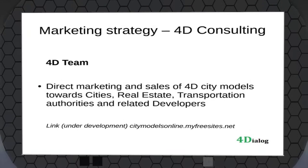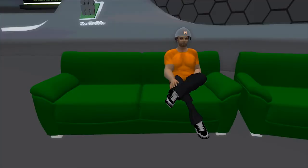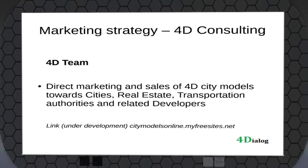In order to achieve 4,000 cities, you need some kind of strategy. We have three legs in our strategy. The first leg is doing city models using the team we've had for several years — we call it the 4D team. From 2018, we are using these three different parts of our organization. The 4D team does direct marketing and sales of 4D city models. Customers are usually cities, airports, real estate developers, transportation authorities and planners. We have a website under development — it won't be launched until January 1st, but I can give you a sneak preview of where we're going.